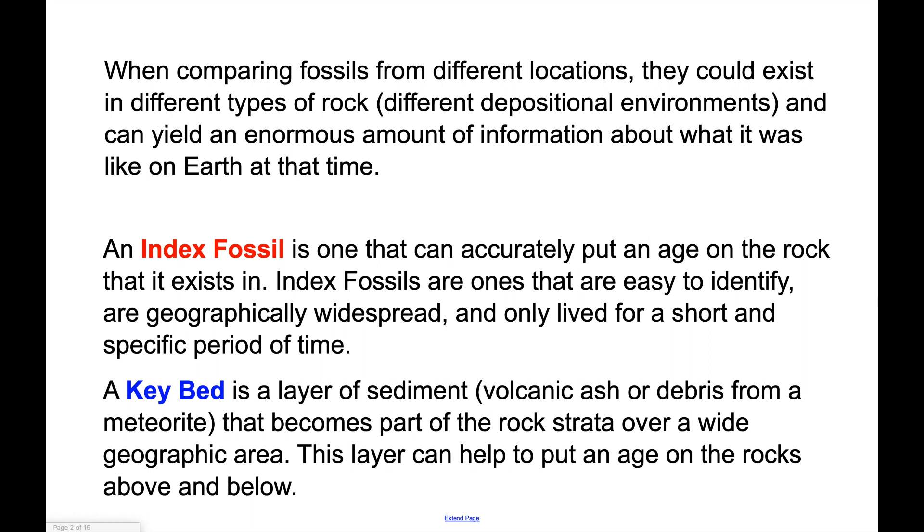Here are some really important terms for today. An index fossil is one that can accurately put an age on the rock that it exists in. Index fossils are fossils of organisms that are really easy to identify, geographically widespread so they were located in lots of different places on Earth, and they were only around for a short amount of time. So if you spot one, they're easy to spot and you know about what time frame that rock was formed in.